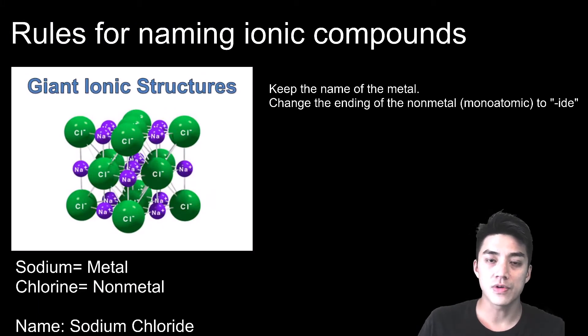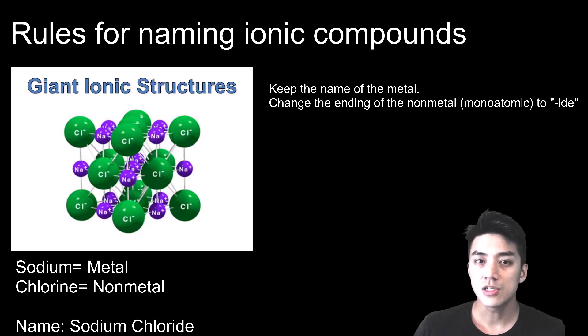There are a few basic rules for naming ionic compounds. First you always keep the name of the metal. You don't do anything to it. Don't change it at all. Second, you change the ending of the non-metal to ide if it's monatomic. I'll discuss the differences between monatomic and polyatomic ions later on, but just for now understand that you just change the ending to ide.